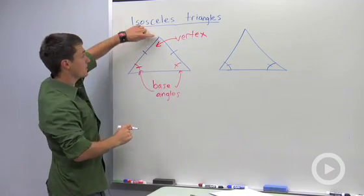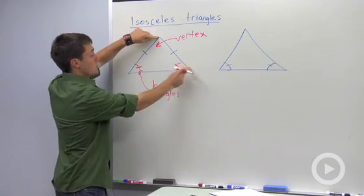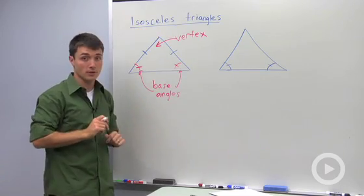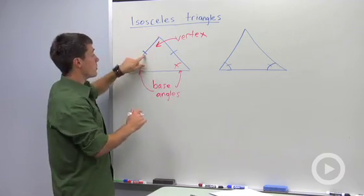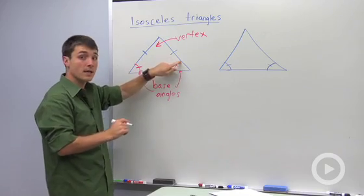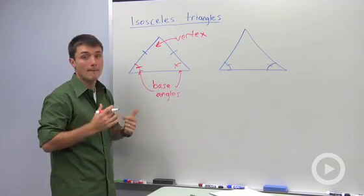Notice that the vertex contains the two sides of the triangle that are congruent. So what I said is if you know that two sides of a triangle are congruent, then the two base angles must be congruent.